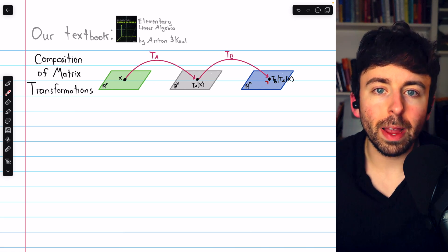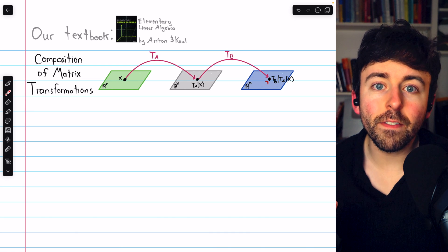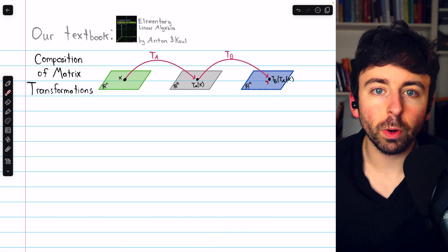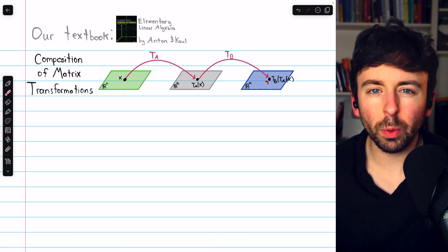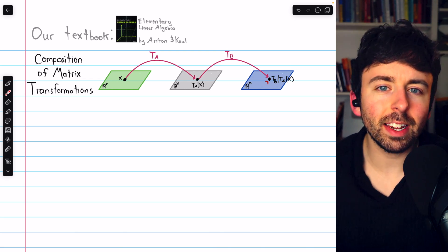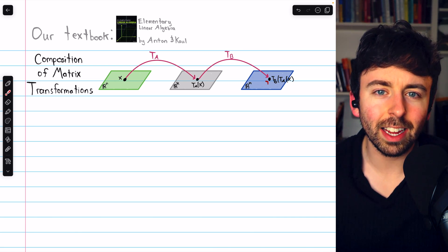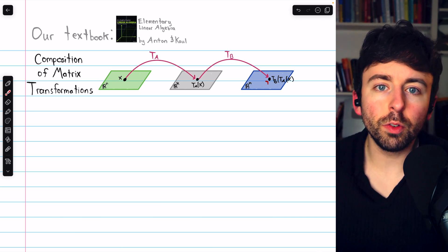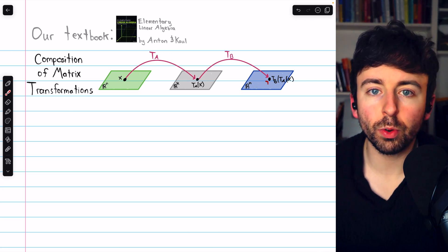Now that we've introduced matrix transformations as a type of function that takes a vector as an input and multiplies it by a matrix to map it into some other vector, we're thinking about functions, so it makes sense to ask if we can compose matrix transformations and what that looks like. If you need an introduction to matrix transformations in general, link in the description. Just like any two functions, we can indeed compose two matrix transformations.